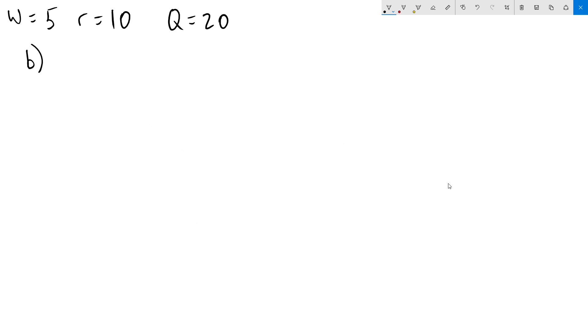For the second part, we have a production function min of 5k and 2L. This is a Leontief production function. For a Leontief production function, we always want to maintain a specific ratio of inputs, because if we go off of that ratio, we're going to have wasted inputs, and therefore we won't be minimizing our cost.